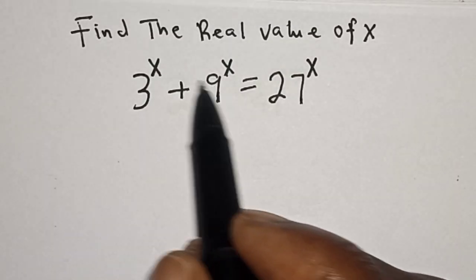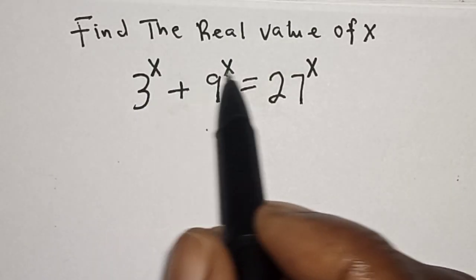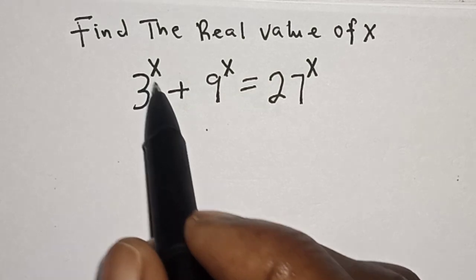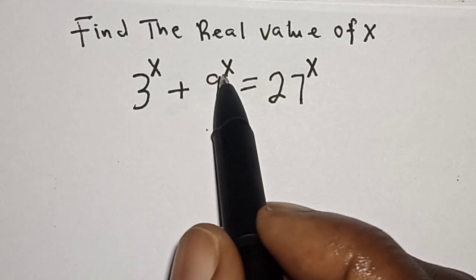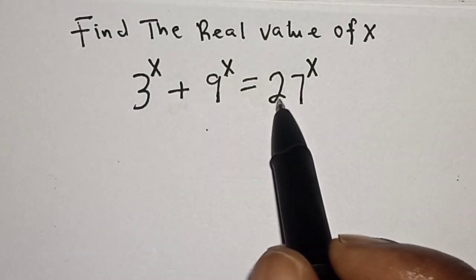Hello, welcome to Madgees. In this class, we want to find the value of s from this equation: 3 raised to power s plus 9 raised to power s is equal to 27.